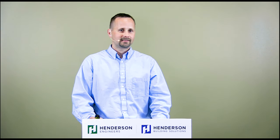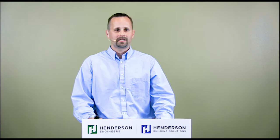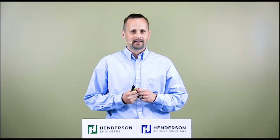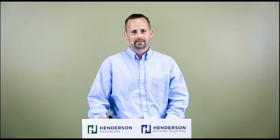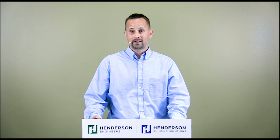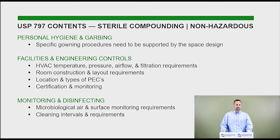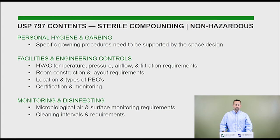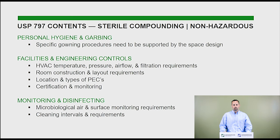I want to talk about the outline of USP 797. Sometimes engineers and architects will go directly to the facilities section and think that's the only thing they have to learn. But every single section has something that affects us, and we need to make sure we understand each section so we can ask the proper questions and accommodate the facility's needs. The first part of the standard is personal hygiene and garbing. While you might think you have no impact on this, it really makes a big difference how you arrange the rooms when you understand the proper procedure.